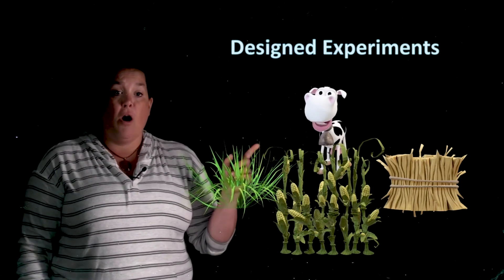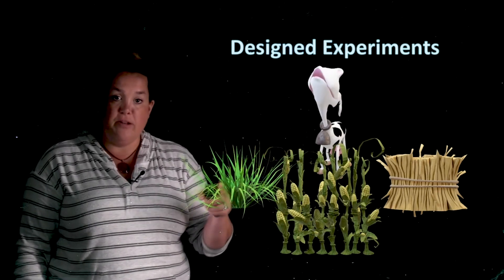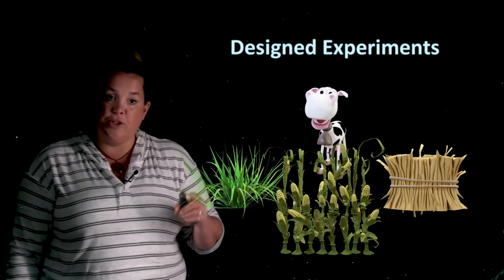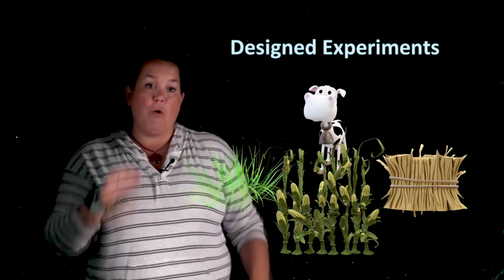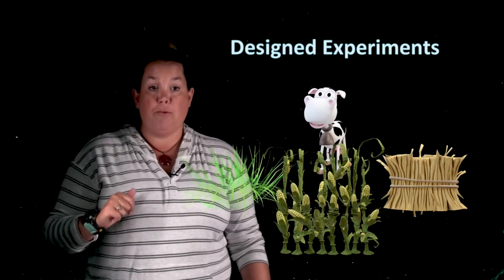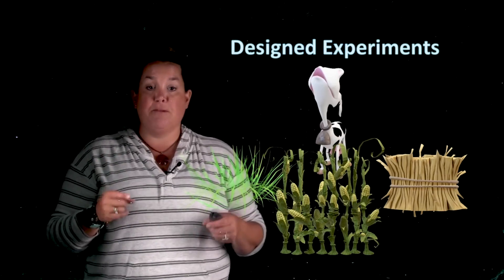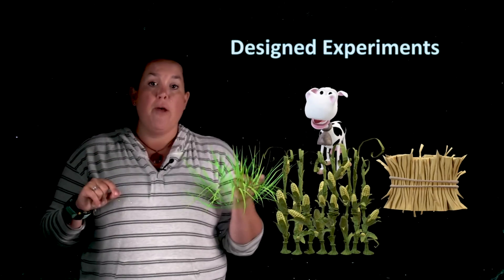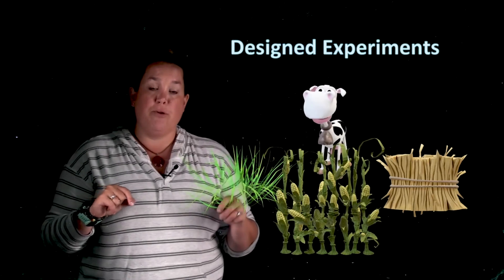Here, our explanatory variable would be type of feed. So that's the factor that we're interested in. And the outcome or our response variable is going to be the amount of milk produced. Okay, explanatory response. Feed, explanatory, response or outcome is going to be the amount of milk produced.